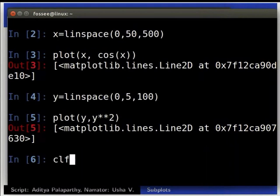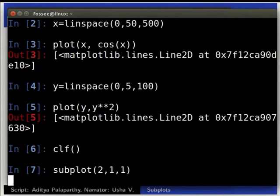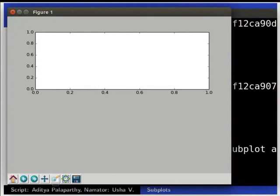Type clf subplot inside brackets 2 comma 1 comma 1. We can see the first subplot.